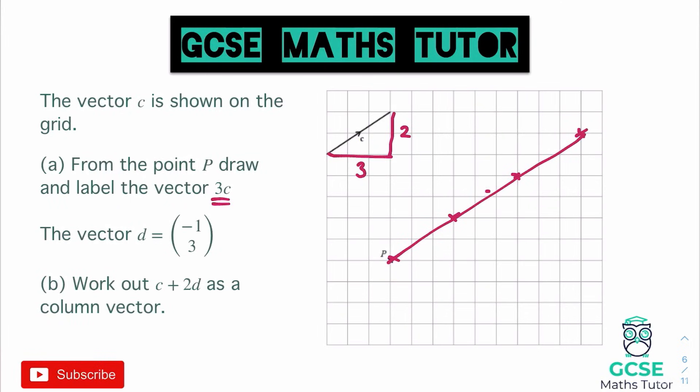We join all those together, put the arrow in the same direction as it's not minus 3C, and label that as the vector 3C — joining it with a pencil and a ruler. The next part says vector D is minus 1 over 3, and wants us to work out the vector C plus 2D as a column vector.